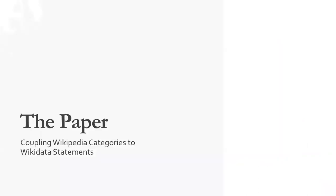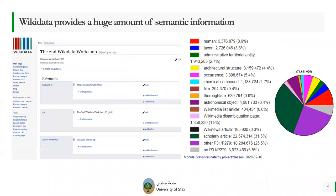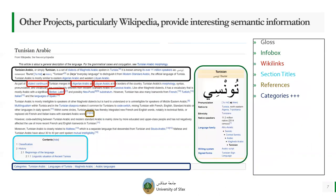So now let's move to our paper. As you already know, Wikidata provides a huge amount of structured semantic information. However, other projects, particularly Wikipedia, can provide other kinds of interesting semantic information that can be used to enrich and validate information included in Wikidata.